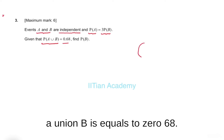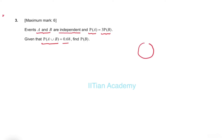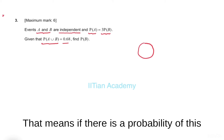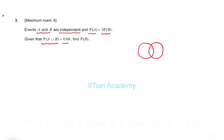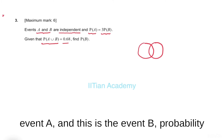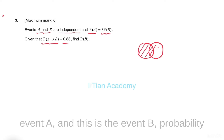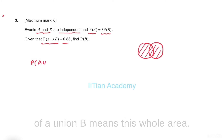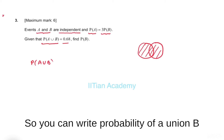It is also given that the probability of A union B equals 0.68. What do we mean by A union B? If there is event A and event B shown in a Venn diagram, the probability of A union B means the whole combined area.